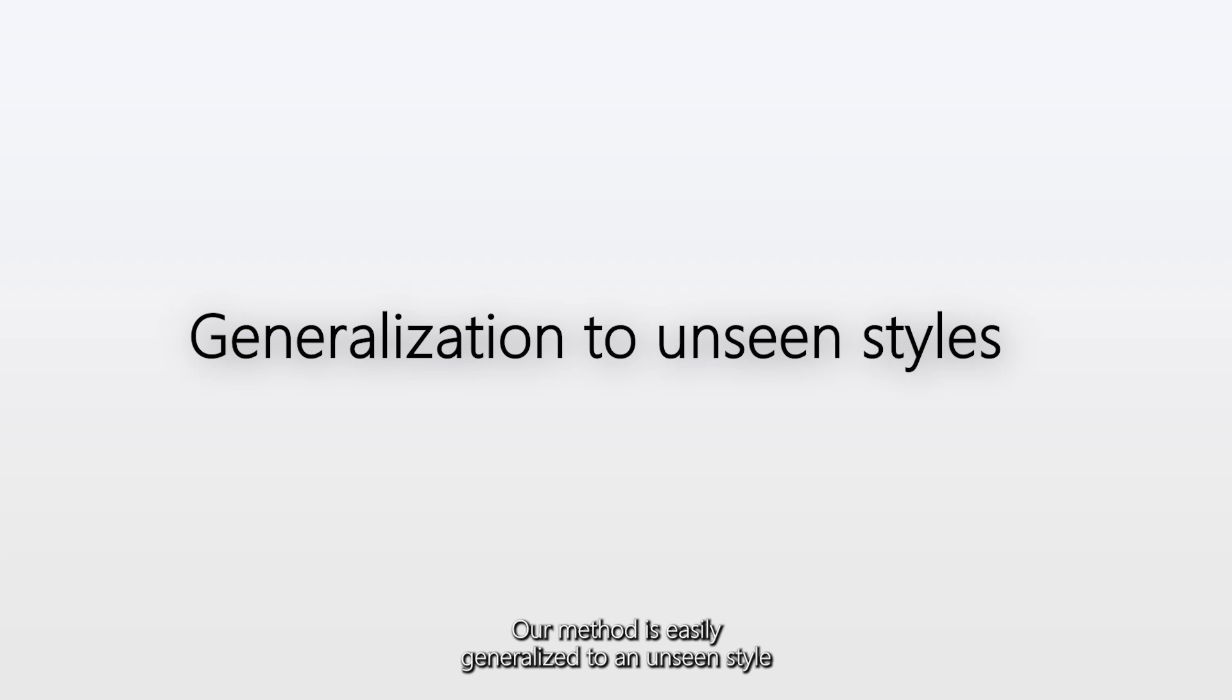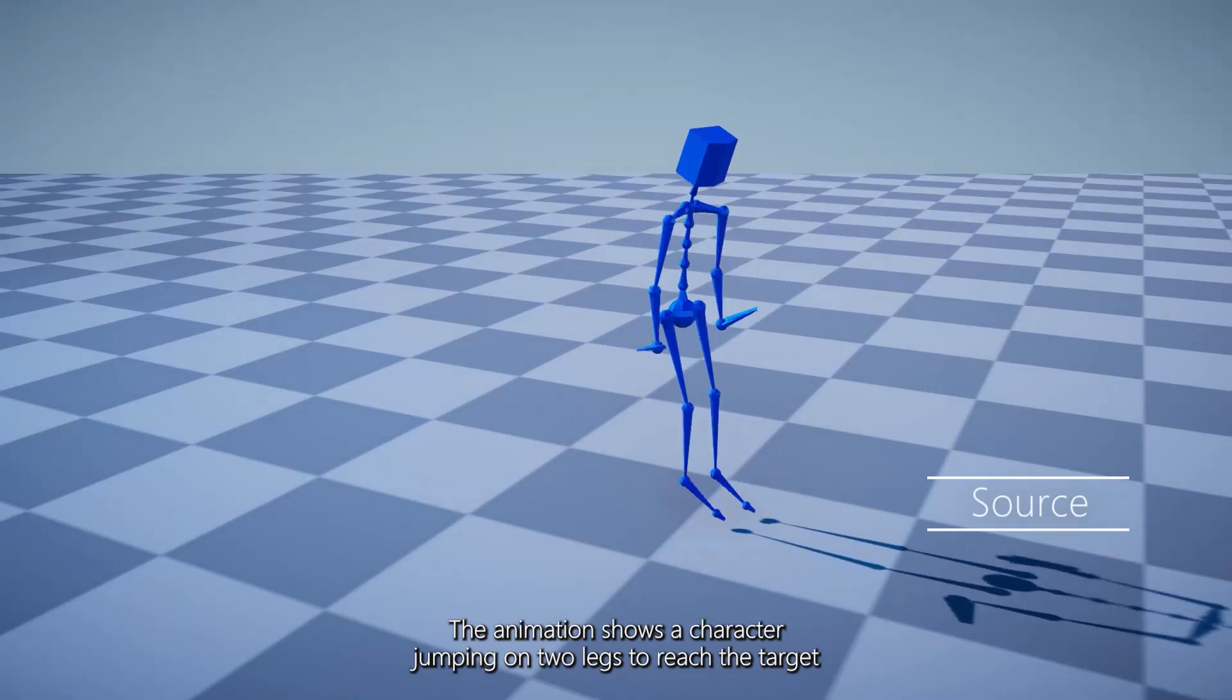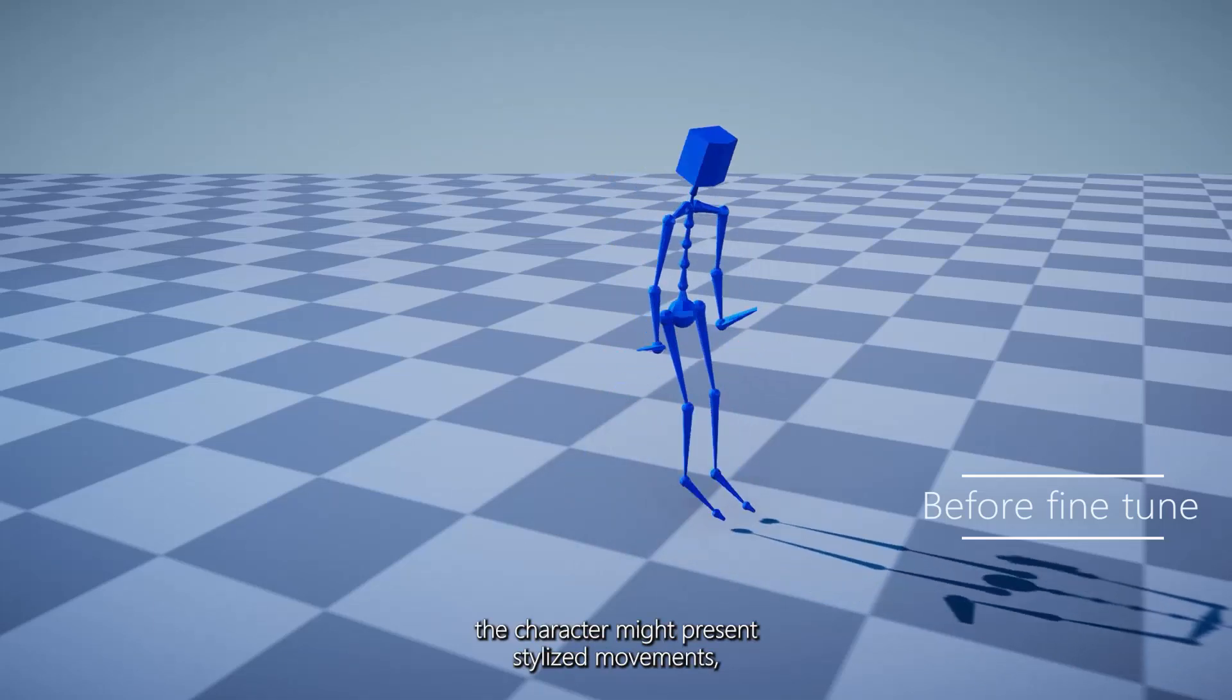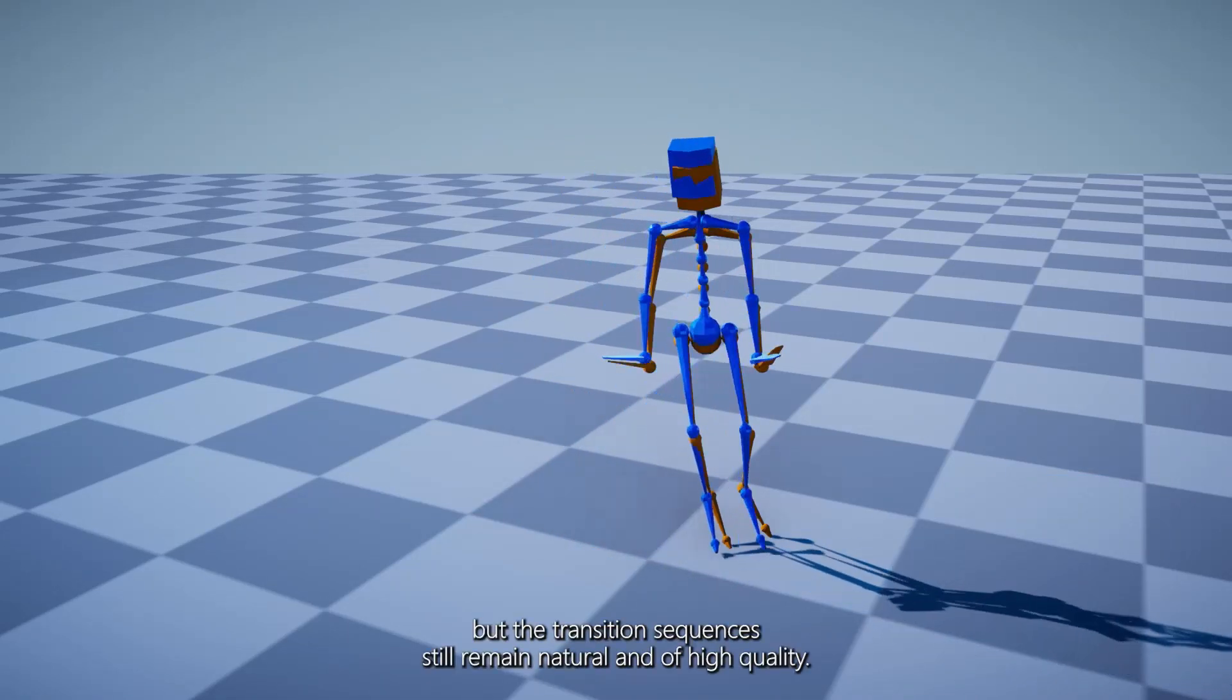Our method is easily generalized to an unseen style by fine-tuning on limited data. The animation shows a character jumping on two legs to reach the target. Before fine-tuning, the character might present stylized movements, but the transition sequences still remain natural and of high quality.